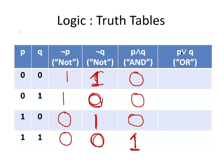The last case we have is P OR Q. In this case, either P has to be true on its own, or Q has to be true on its own, or both are true. There's only one case where we get a 0 — where they're both false, 0 and 0. For the rest of the cases, we'll get all 1s.